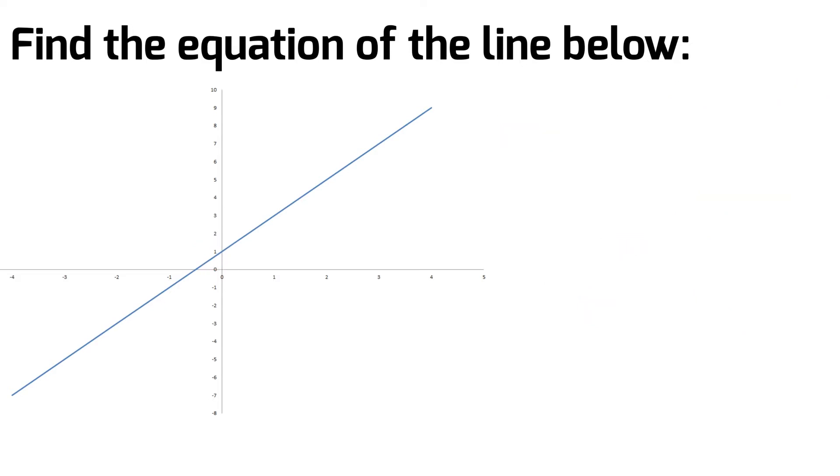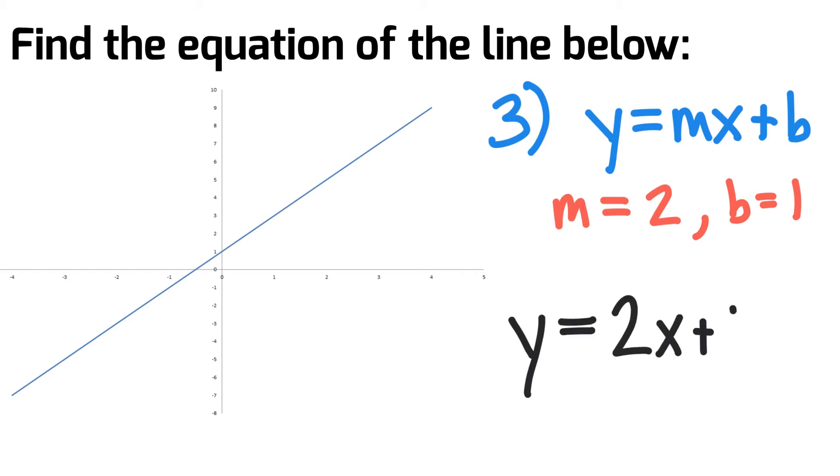Let's take those two values of m and b and substitute those into the y equals mx plus b equation, where m equals 2 and b equals 1. I substitute those into my equation to get y equals 2x plus 1, and that's the equation of the straight line in slope-intercept form.